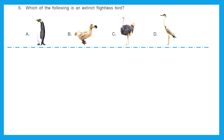Question 5: Which of the following is an extinct flightless bird? We have option A as penguin, B is dodo bird, C is ostrich, and D is heron. Do you know which one has been now extinct — they are no more there? It is option B, dodo bird. The dodo bird is an extinct flightless bird.